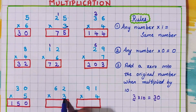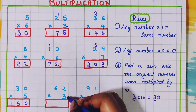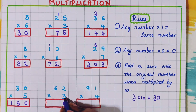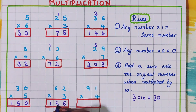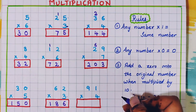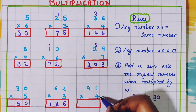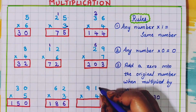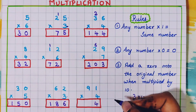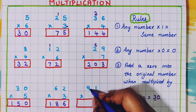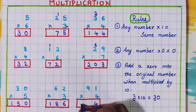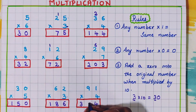Next: 62 into 3. First, 3 2s are 6. Next, 3 6s are 18; so here I will write 18. So the answer is 186. Next: 91 into 4. First, 4 1s are 4. Next, 4 9s are 36; so here I will write 36. So the answer is 364.